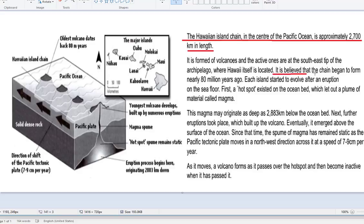Here we have this phrase, it is believed that the chain began to form nearly 80 million years ago. The volcano dates back to 80 million years. So, it is believed that, this is not the phrase to be using when you are describing data. So, instead of saying, it is believed that the island chain began to form, just state, the island chain began to form nearly 80 million years ago. Leave out the 'it is believed that'.